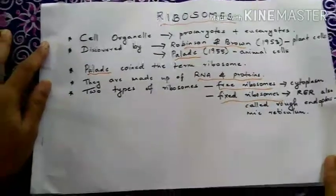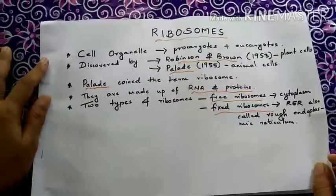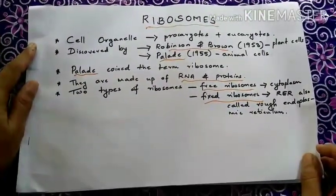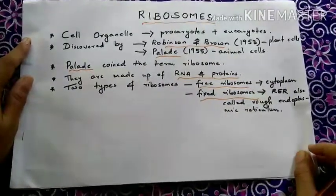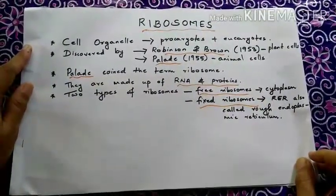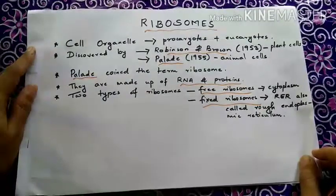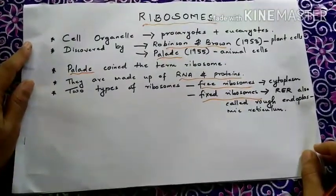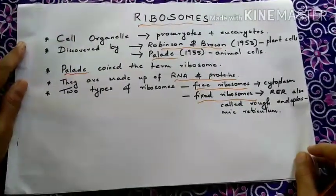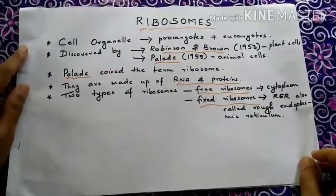Today we are here with our second video and the second part of cell organelles. Today we are going to learn in detail about ribosomes, one of the most important cell organelles found commonly in all prokaryotes and eukaryotes.